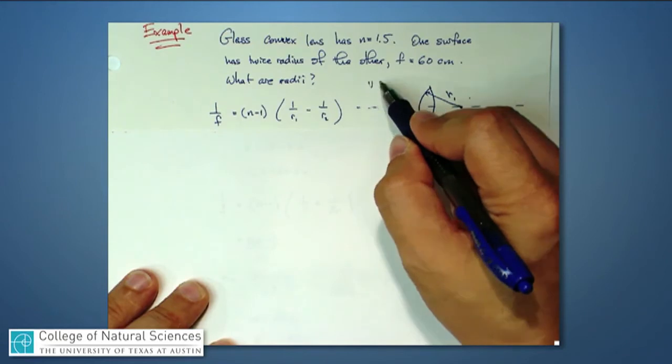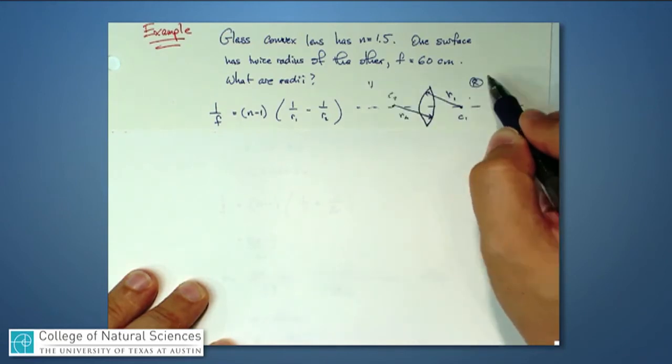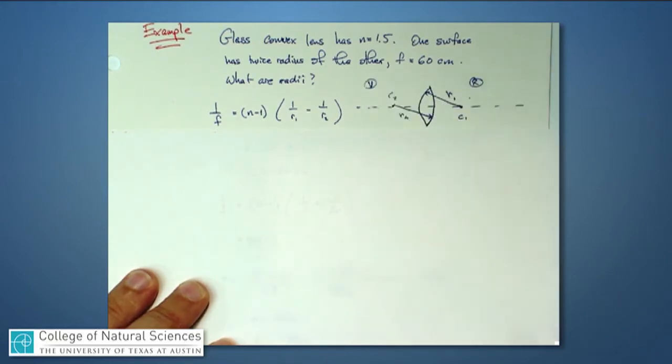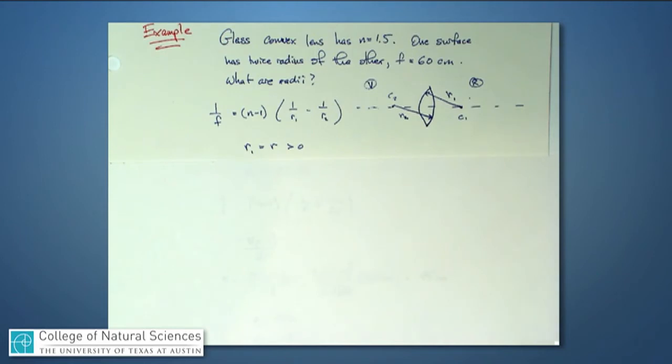If this is the v side and this is the r side, I have to start putting some signs on r1 and r2. So r1, I'll call it a number r. That's going to be a positive number because the center of curvature for r1 is over on the real side.